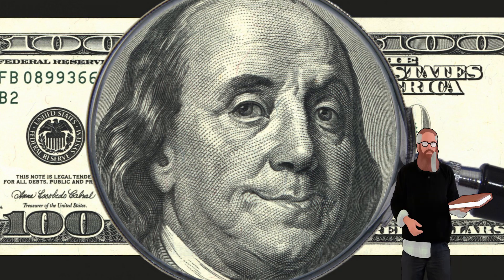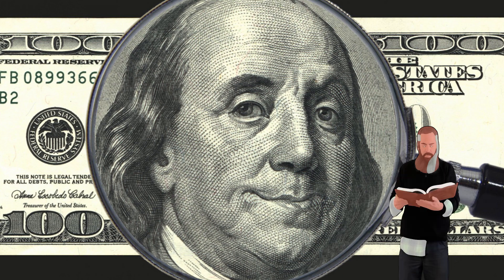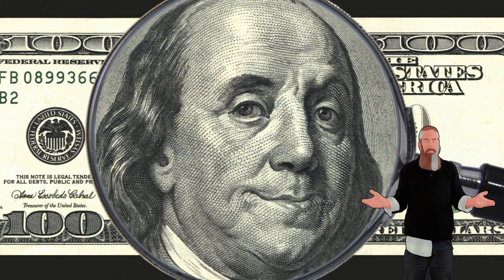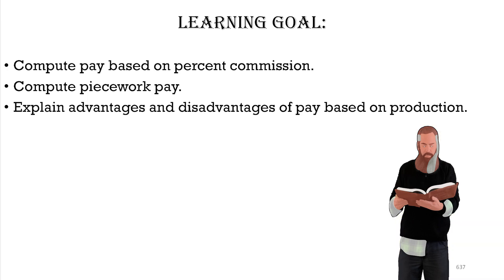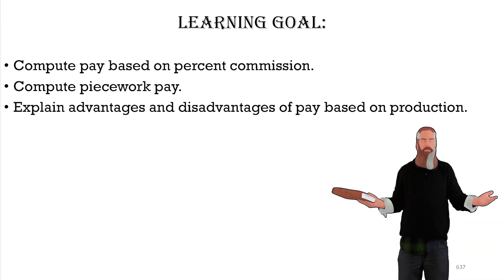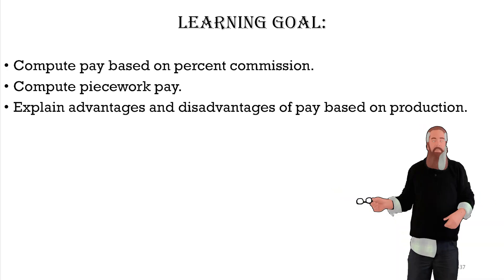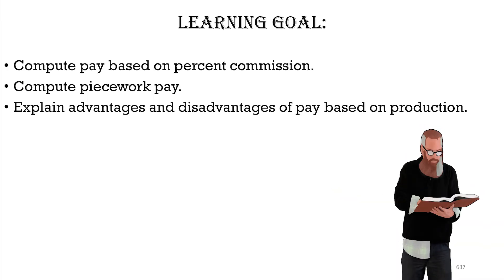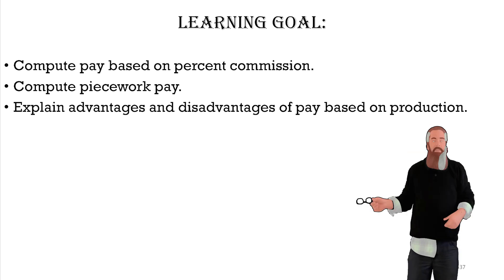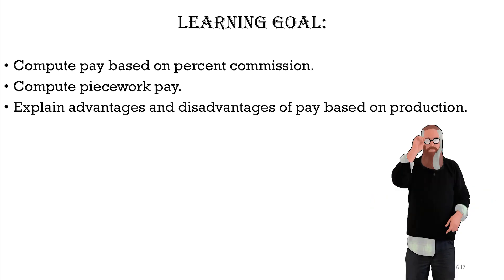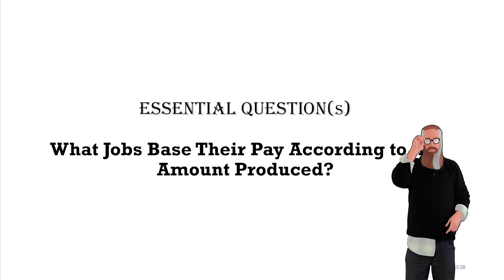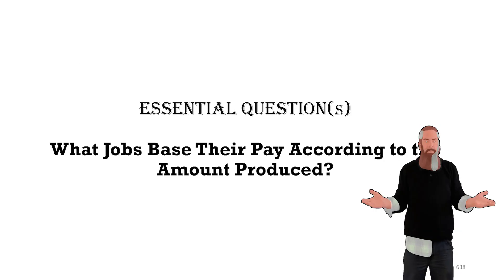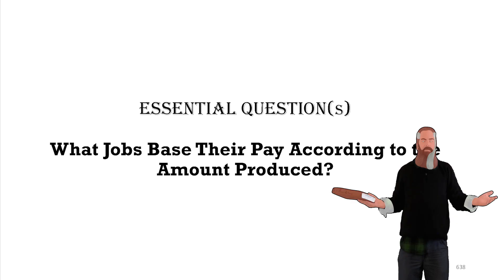American statesman Ben Franklin said, 'He that is of the opinion money will do everything may well be suspected of doing everything for money.' In this lesson we're going to compute pay based on a percentage commission, compute piecewise pay, and explain advantages and disadvantages of pay based on production — all to answer the question: what jobs base their pay according to the amount produced?